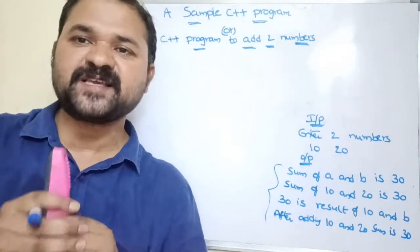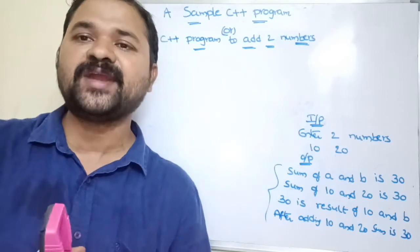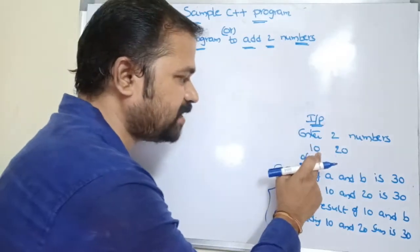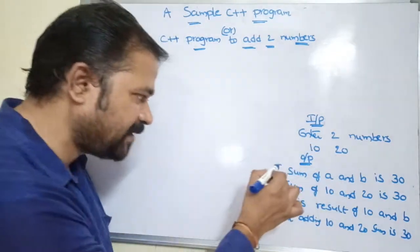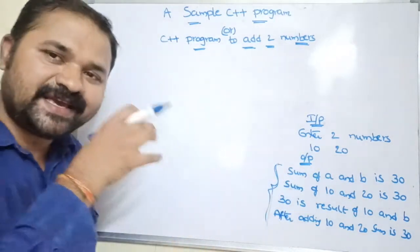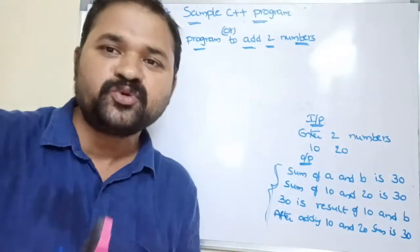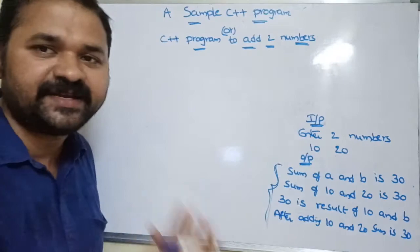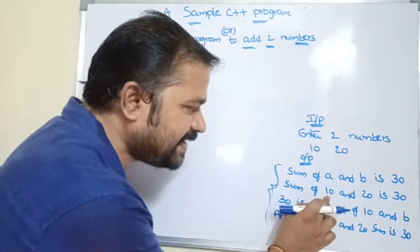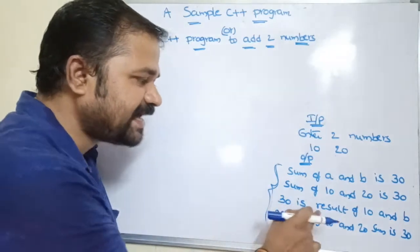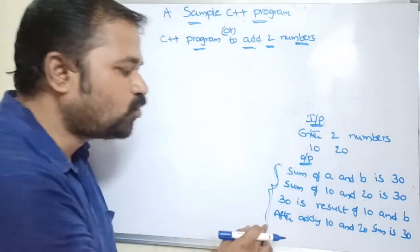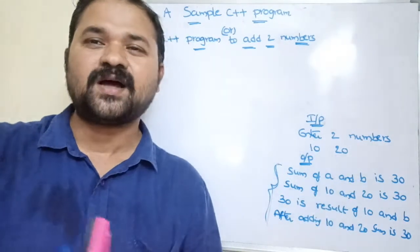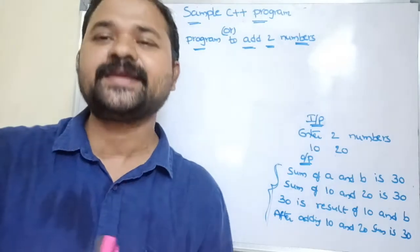Let's look at a sample C++ program to add two numbers. The input is two numbers — 10 and 20 — and the output prints a message in four lines. We are mainly focusing on how to use cout. The four output lines show: 'sum of a and b is 30', 'sum of 10 and 20 is 30', '30 is the result of 10 and b', and 'after adding 10 and 20 sum is 30'. Understanding this program helps us use cout efficiently in any program.